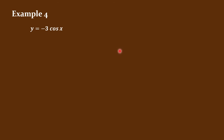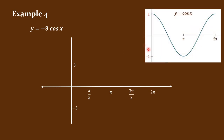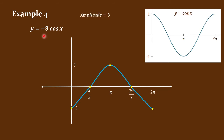For y = negative 3 cosine x, the amplitude is 3. Since this is negative, instead of starting above the midline, we set the point at negative 3. Then pi over 2 is 0, pi is 3, 3 pi over 2 is 0, and 2 pi is negative 3. The amplitude is 3, period is 2 pi over b = 2 pi, domain is negative infinity to infinity, and the range is from negative 3 to 3.